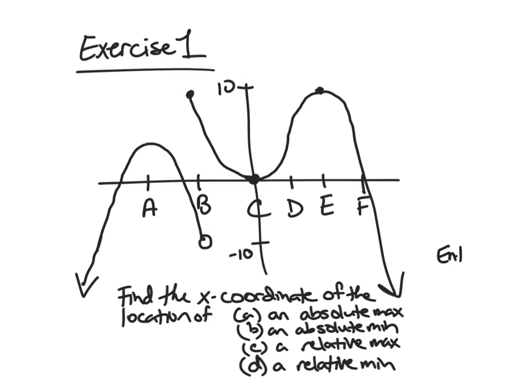So, again, enter all possible. And if you don't think there is one, then write d and e if there isn't one.